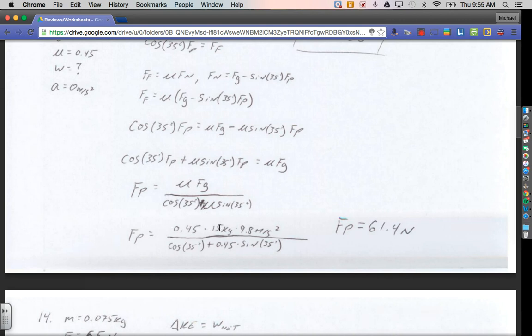Mu is 0.45. Force of gravity was mass, 15 kilograms, times g, 9.8 meters per second squared, all over the cosine of 35 plus mu, 0.45, times sine of 35 degrees. And once I do that, I get a force of pull of 61.4 newtons. That's how much I'm pulling.